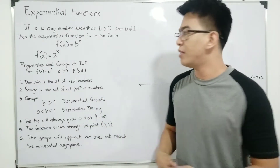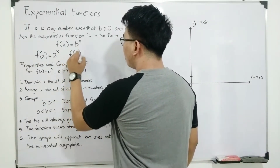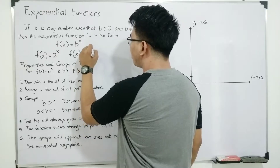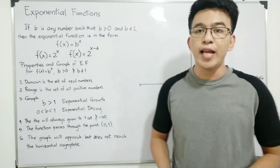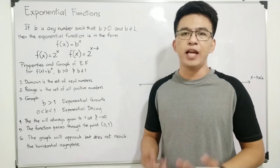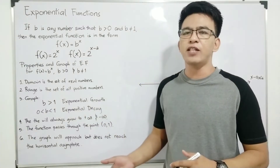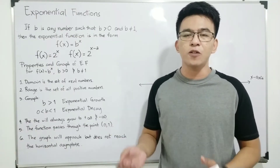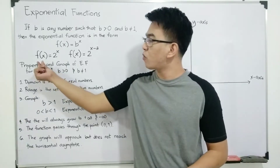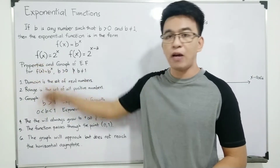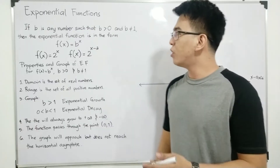Another example is f of x is equal to 2 raised to x minus 3. This is also an example of an exponential function. You can search the internet for more examples. By the way, you can also replace f of x with y, because f of x is equal to y.